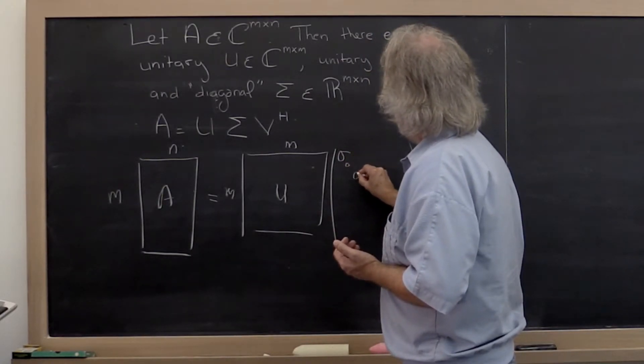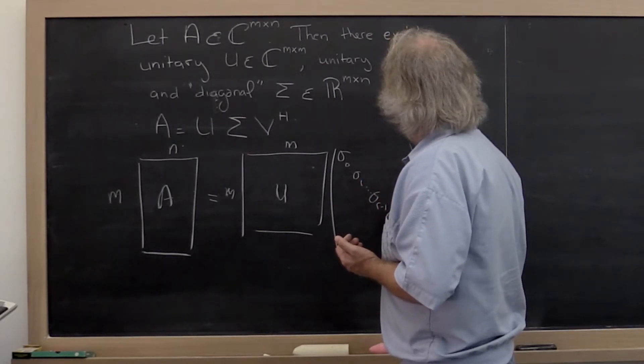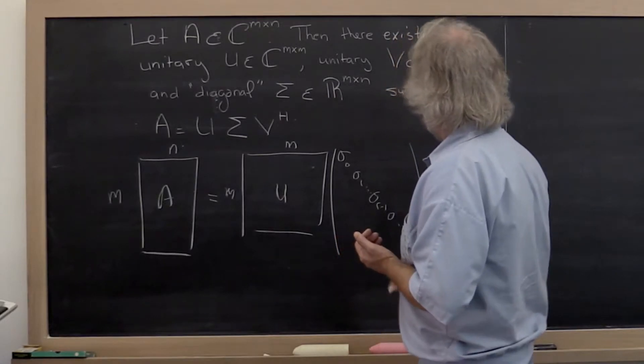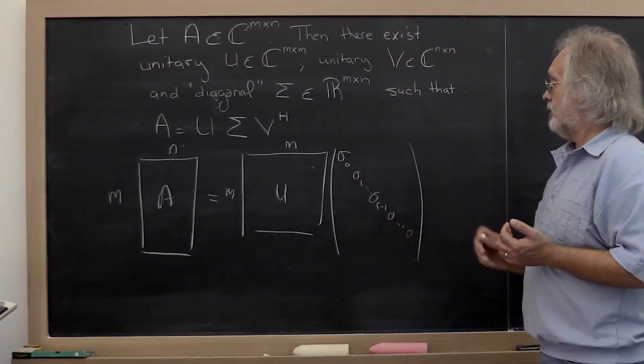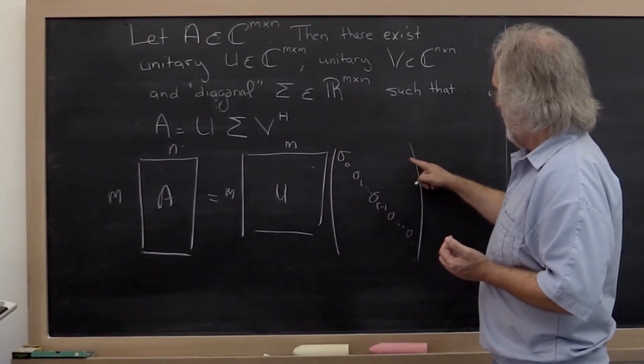Sigma zero, sigma one, up to some number sigma r minus one. And then afterwards you get zeros. And everything off the diagonal is zero. This is the main diagonal. And notice that this has to be M by N.